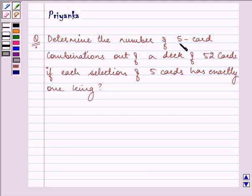The question says, determine the number of 5 card combinations out of a deck of 52 cards if each selection of 5 cards has exactly 1 king.